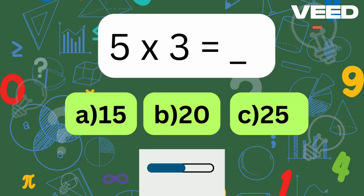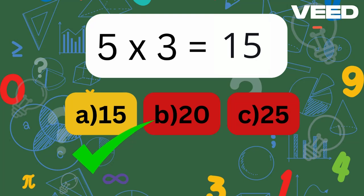5 times 3 is? That's right, 5 times 3 is equal to 15.